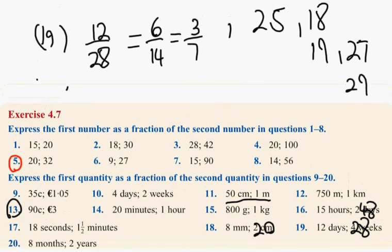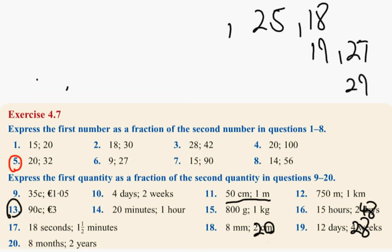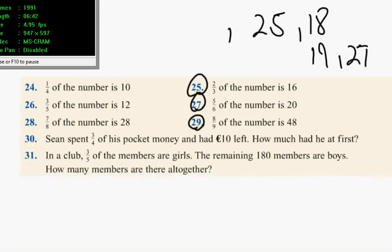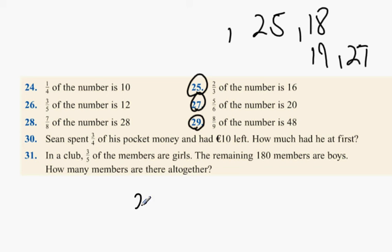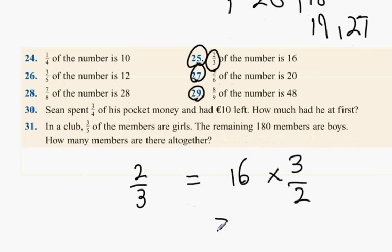Can I do number 25 now? Question 25 is 2 thirds of a number is 16. So, 2 thirds of some number is 16. That means that the number we're talking about has to be bigger than 16, doesn't it? It does because 2 thirds of it is smaller. So, what we do is we always turn it upside down. It was 2 thirds, so we're going to multiply by 3 and divide by 2.